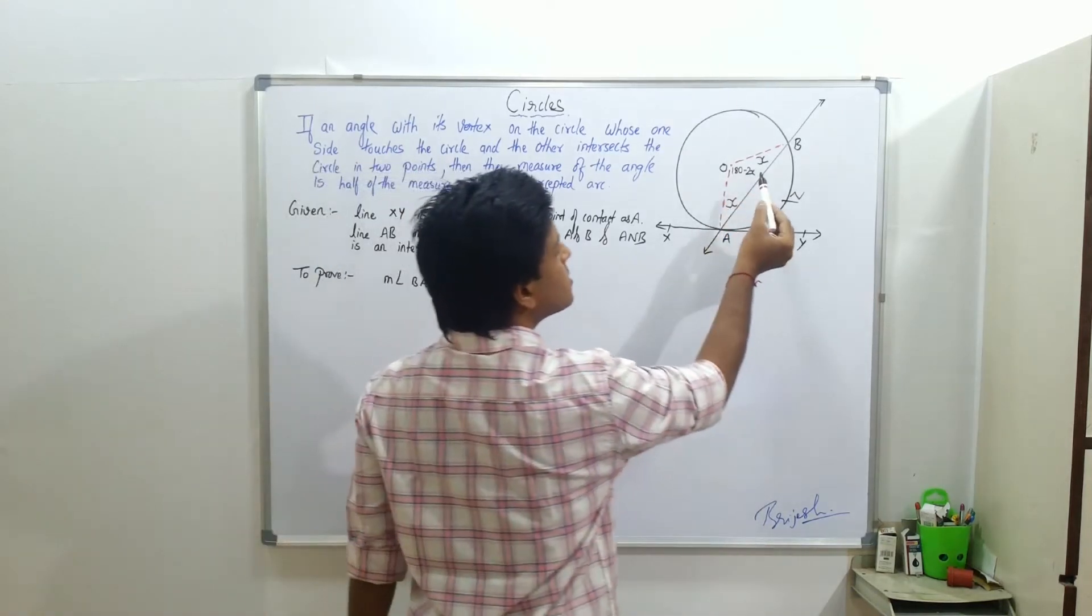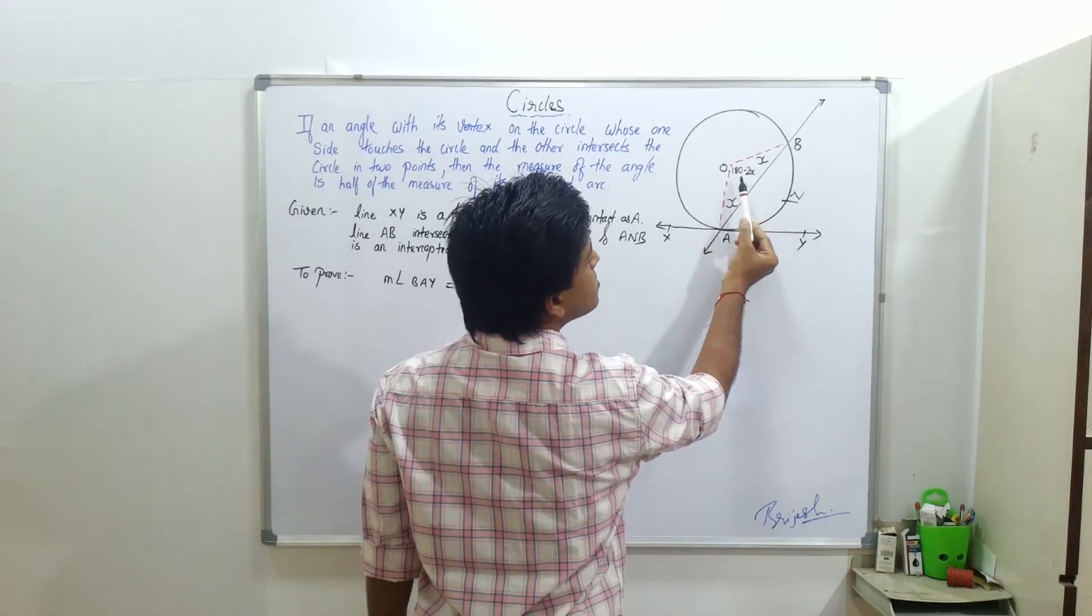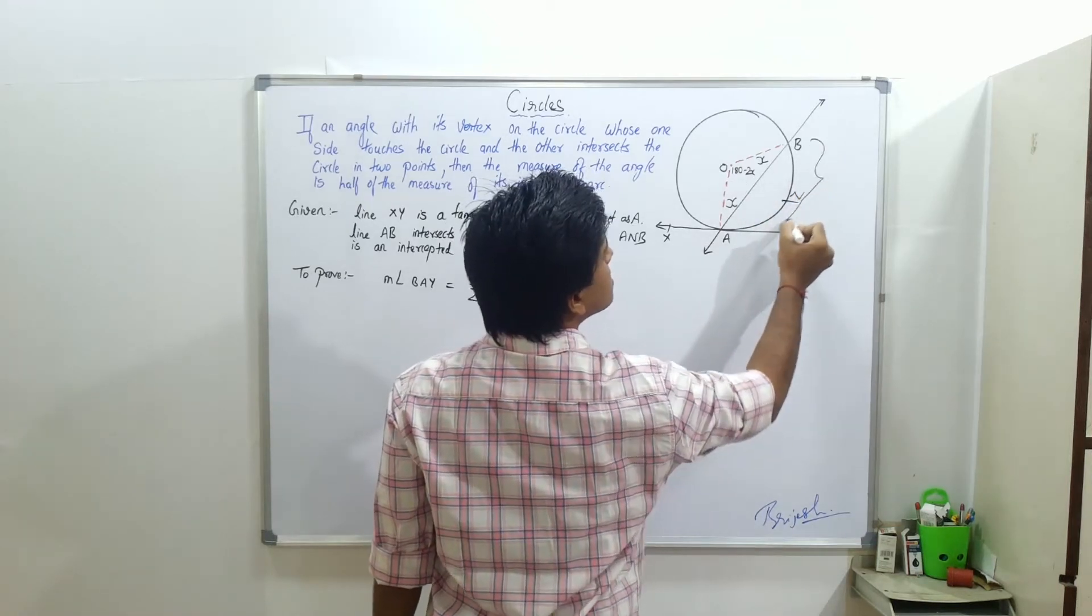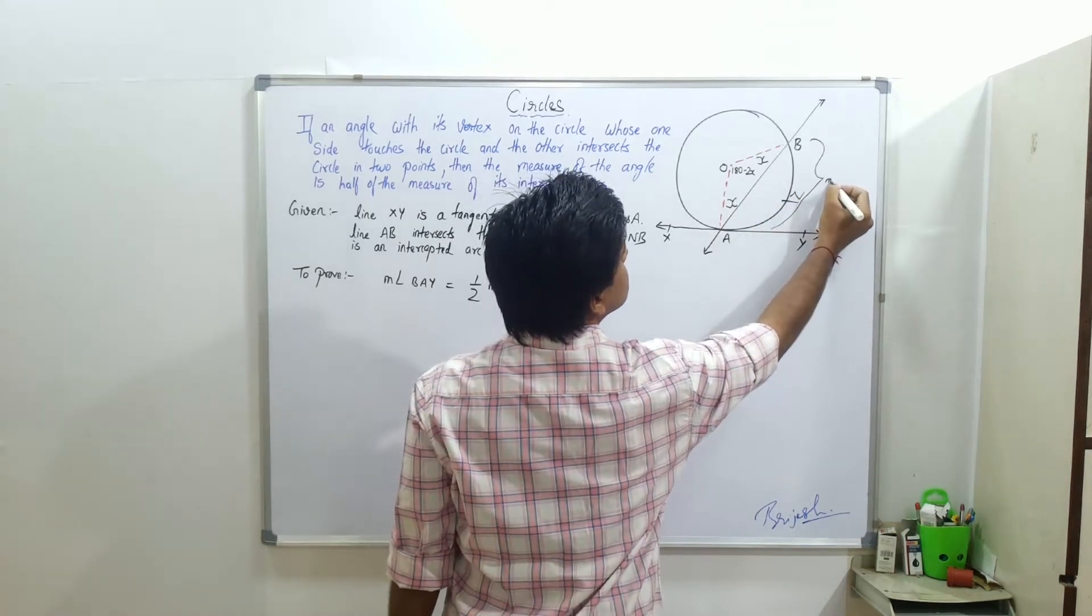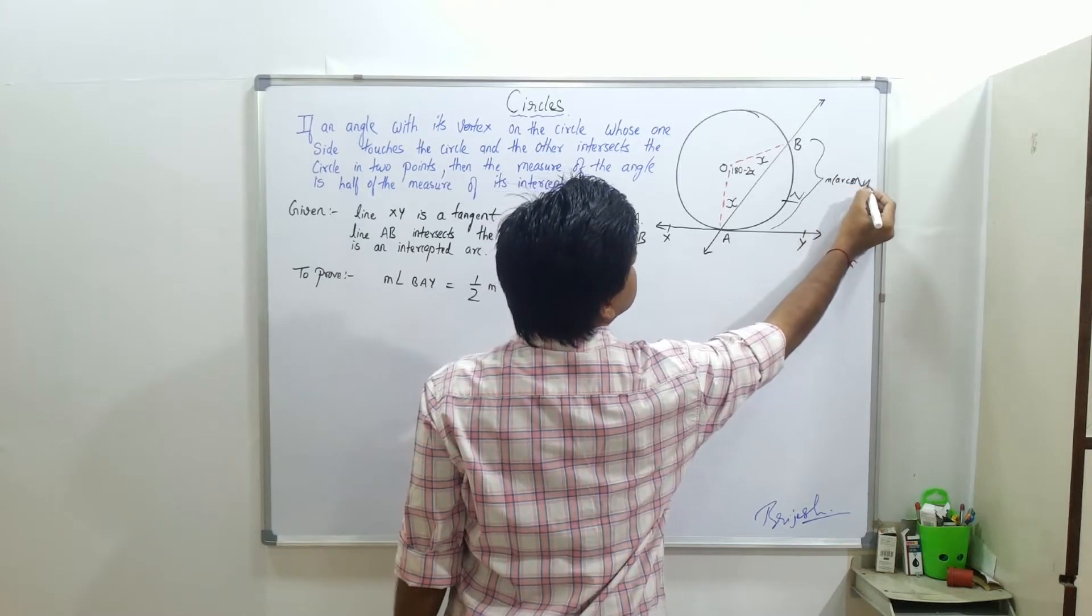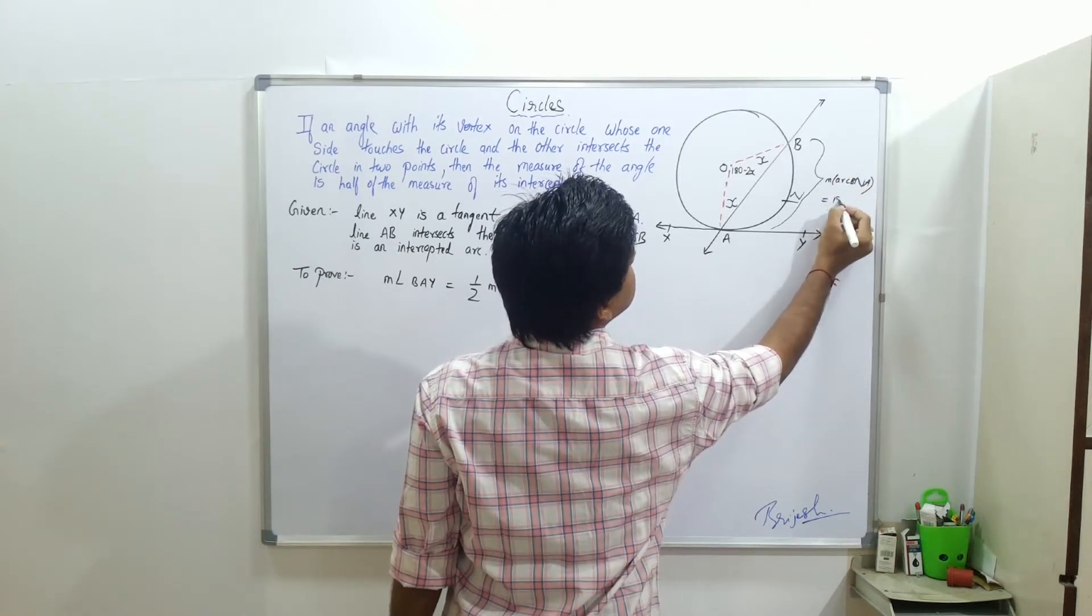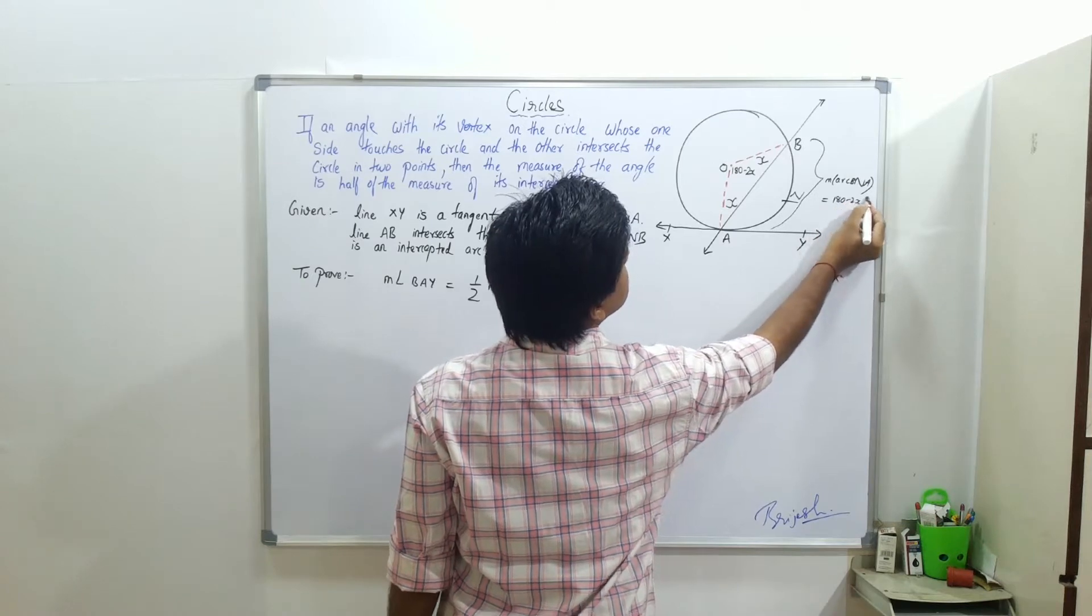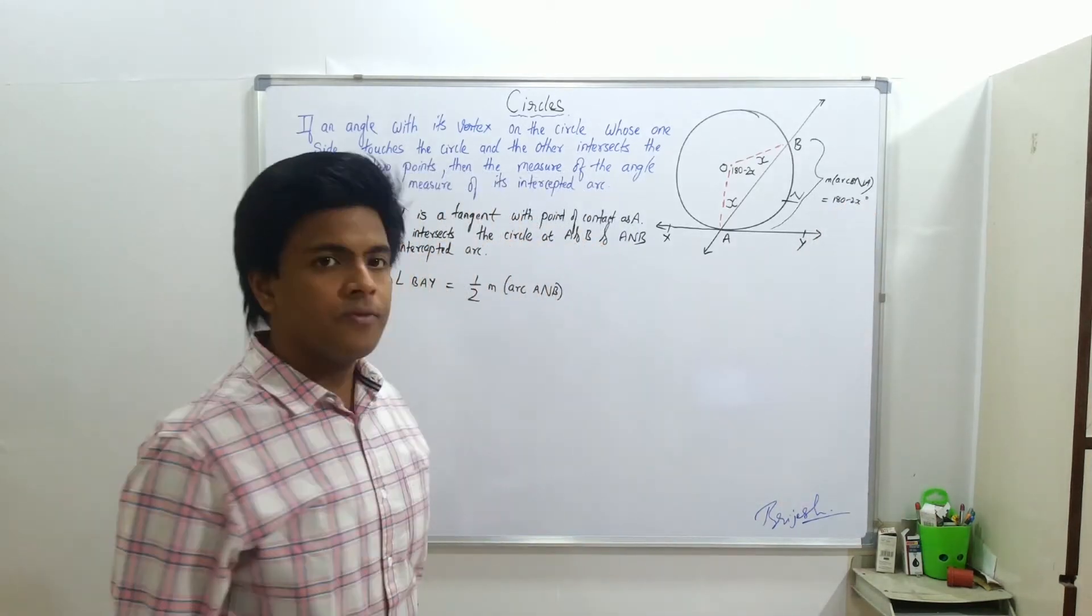If this is 180 minus 2X, then this arc length, measure arc BA will be equal to 180 minus 2X.